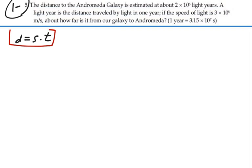So the distance to Andromeda would be equal to the speed of light times the time it takes light to travel that distance.